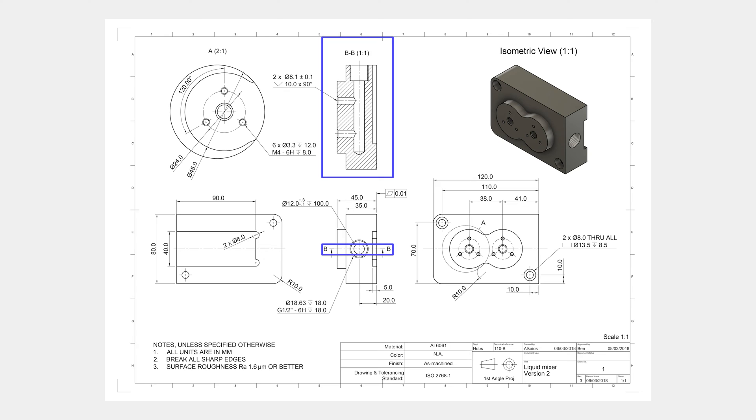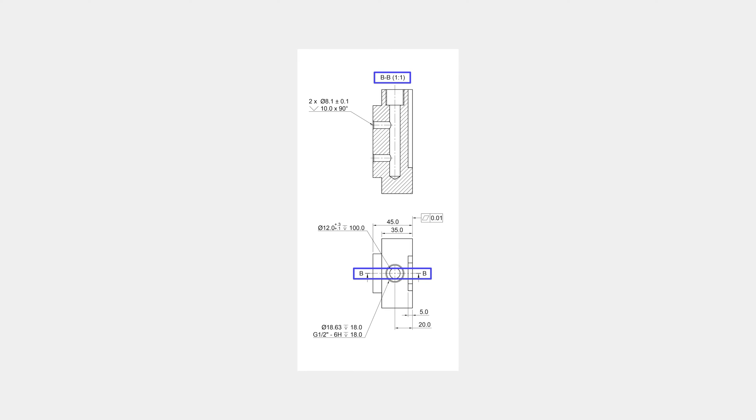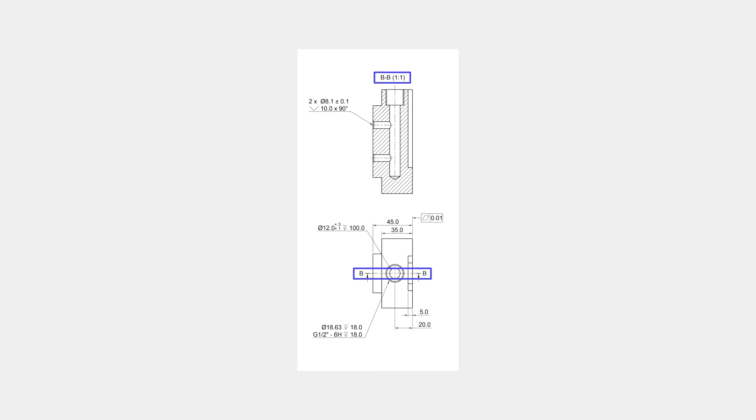Fourth, section views. Section views are used to show the internal details of a part. The cutting line in the main orthographic view shows where the part is cross-sectioned and the cross-hatch pattern. The section view indicates regions where raw material has been removed. Technical drawings can have multiple section views, with two letters linking each cutting line with each section view — for example, AA and B. The arrows of the cutting line indicate the direction. The part can be sectioned along its whole width, along half its width, or at an angle.